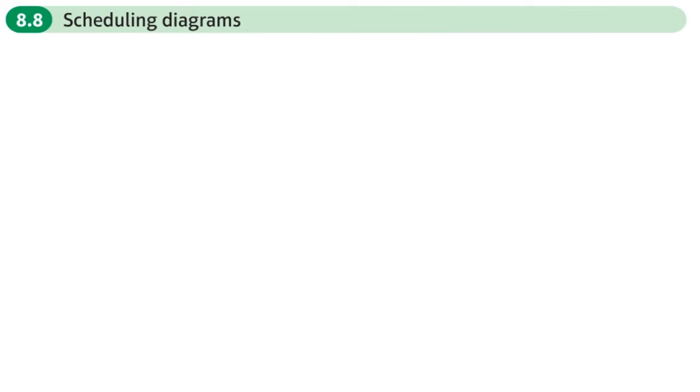This is the eighth and final section of chapter eight on critical path analysis. This is on scheduling diagrams.